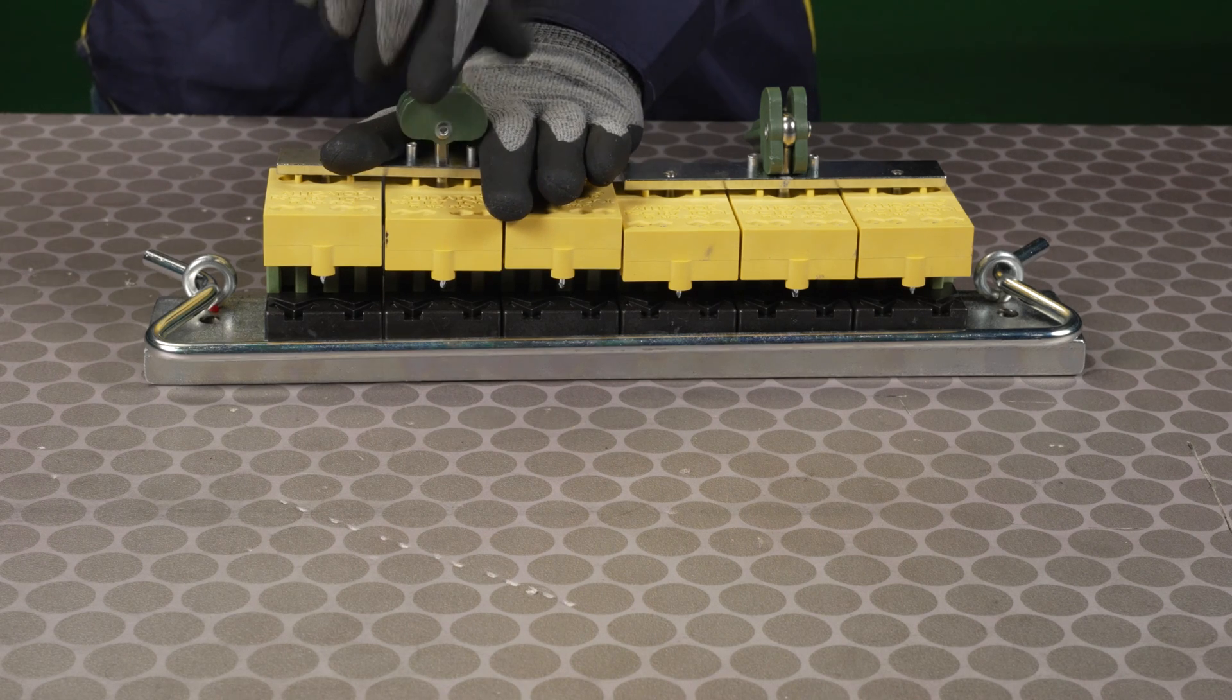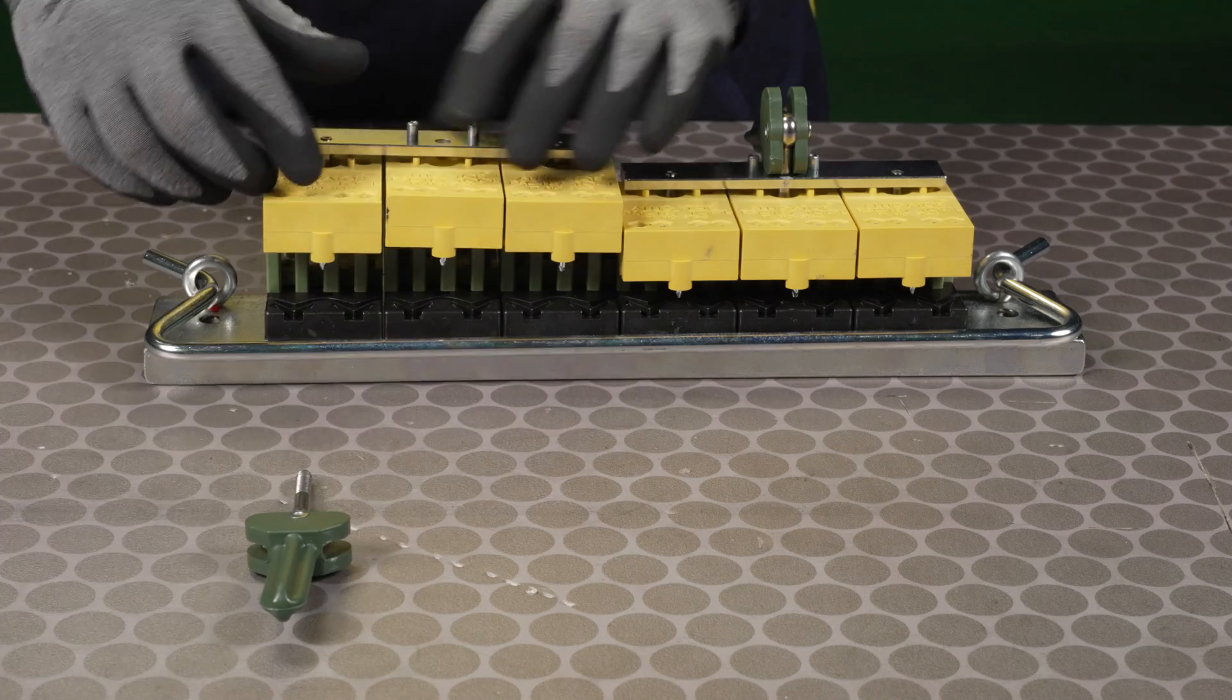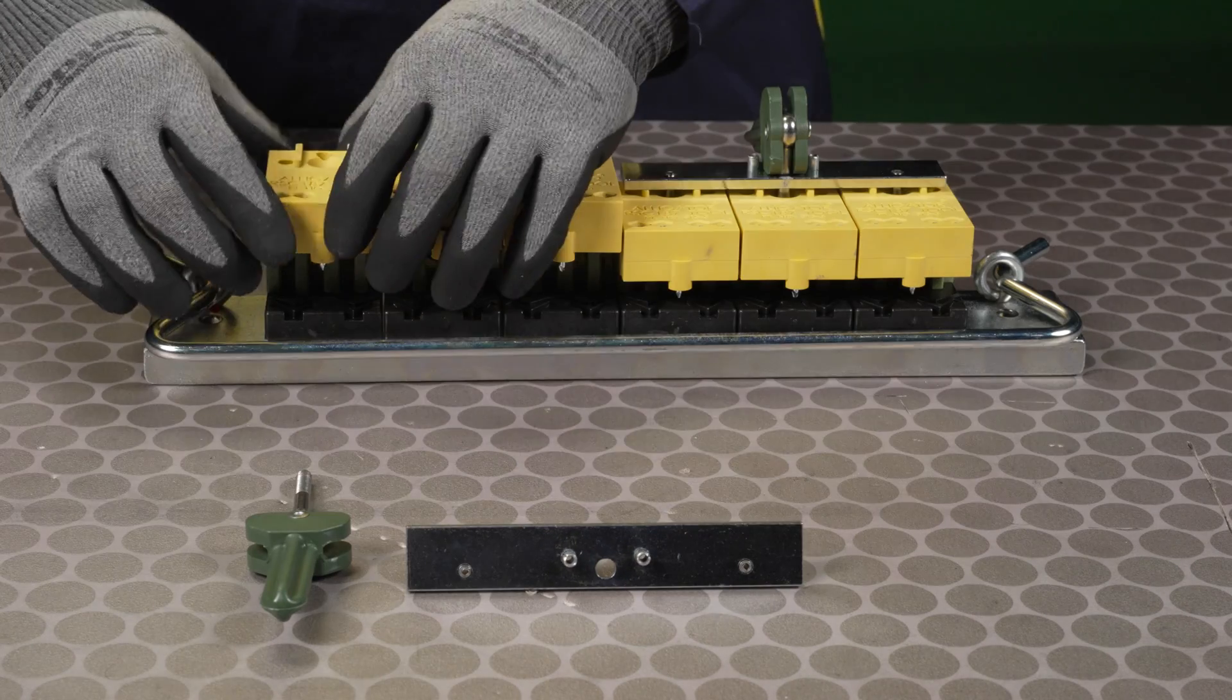Depress the clamp bar. Turn the cam levers counterclockwise and remove all the cam levers, guide blocks, and combs.